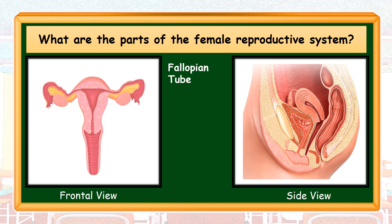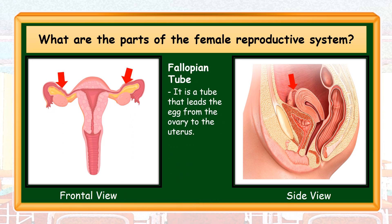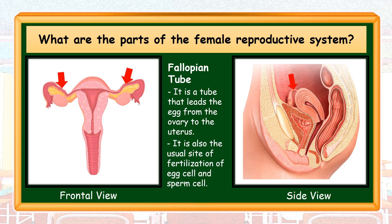Fallopian tube. It is a tube that leads the egg from the ovary to the uterus. It is also the usual site of fertilization of egg cell and sperm cell. Females also have two fallopian tubes that connect the two ovaries to the uterus. Fertilization takes place in this part when the egg cell and sperm cell unite.